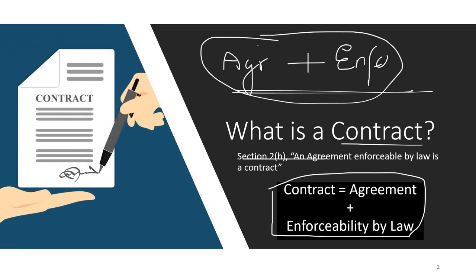According to Section 2, subsection H of the Contract Act 1872, an agreement enforceable by law is a contract. A tip for remembering: Section 2 is always the definition section across any law — whether the Contract Act, Partnership Act, or Sale of Goods Act — you will find all definitions there. So Section 2(h) of the Contract Act says an agreement enforceable by law is a contract.